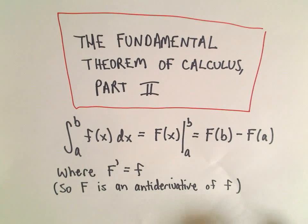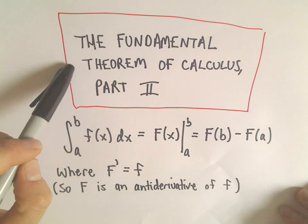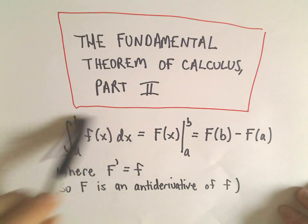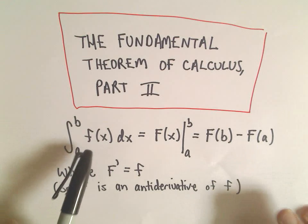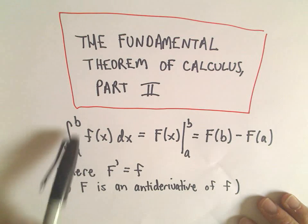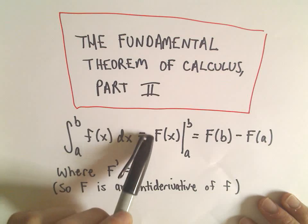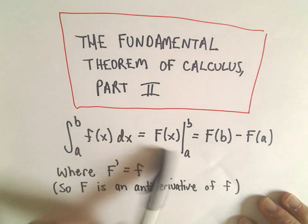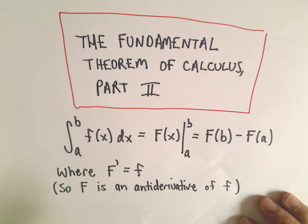So what the Fundamental Theorem of Calculus Part 2 tells us, it tells us how to calculate a definite integral. So if we want to integrate little f of x dx from a to b, it says what we do is we find capital F of x, which is an antiderivative.